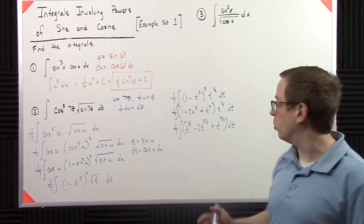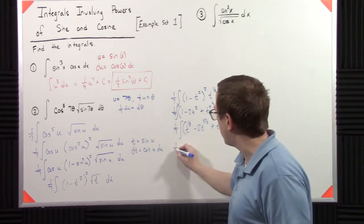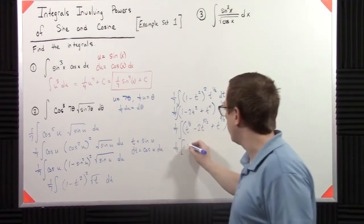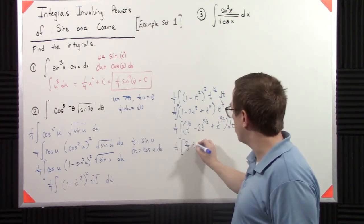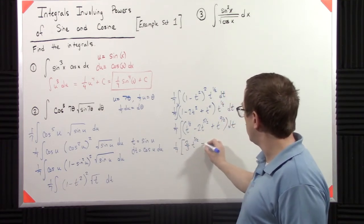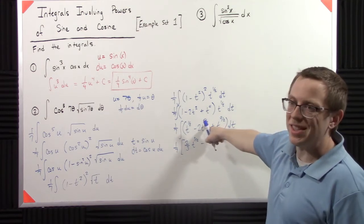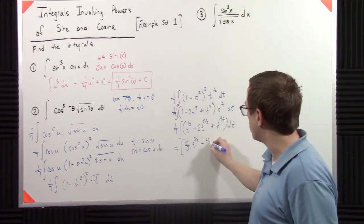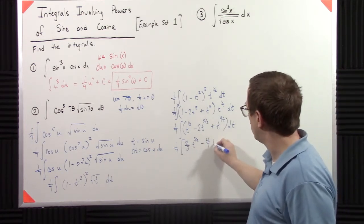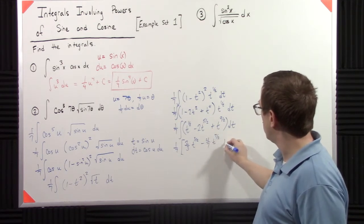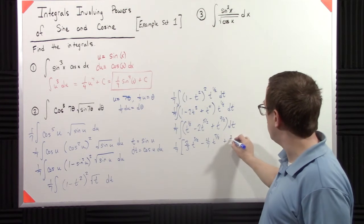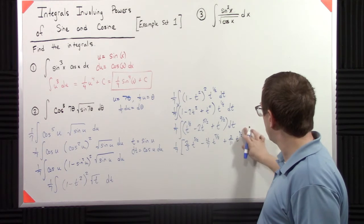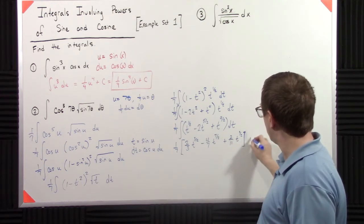So now that I have that, I can just use the power rule. I have a one-seventh out here. Add one to the power, so that makes that t to the three-halves divide by that power. So I have two-thirds. And then add one to the power. That makes that seven-halves. When you divide, that would be like two-sevenths. But I've already got a two, so that's going to be four-sevenths. And then similarly, this is going to be two-elevenths t to the eleven-halves plus c.